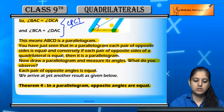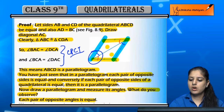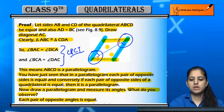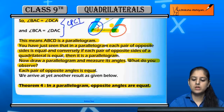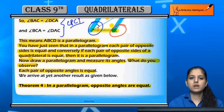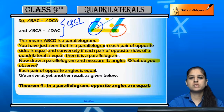If we are given a parallelogram ABCD, then angle A equals angle C, and angle B equals angle D. So in a parallelogram: the opposite sides are equal, the opposite sides are parallel, and the opposite angles are equal.